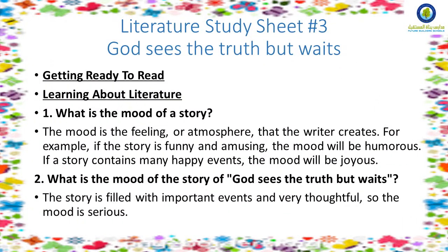Before we start talking about the story, or Part 1 of the story, or the first page of Part 1, we will introduce something about the most important elements of the story — the thing that we do before reading the story and before introducing the whole story. As you see, literature study sheet 3, the title of the story is 'God Sees the Truth But Waits.' From the title, you can expect that we are going to read something about events related maybe to some values, something related to the characters, what would happen to them.